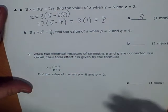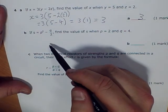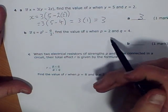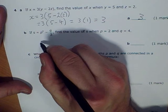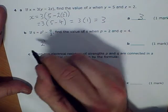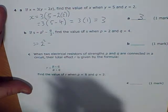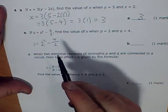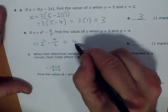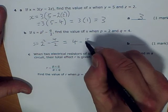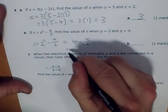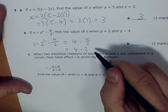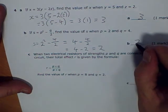Next question. p squared minus q over 2. s equals p squared minus q over 2, and I'm going to substitute in p equals 2, q equals 4. So I've got s equals 2 squared minus 4 divided by 2, which is the same as 4 minus 4 divided by 2, which is 4 minus 2, which equals 2.